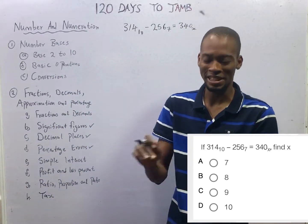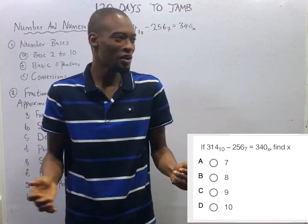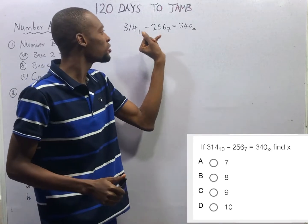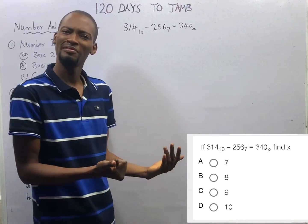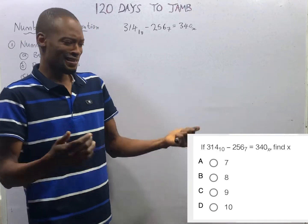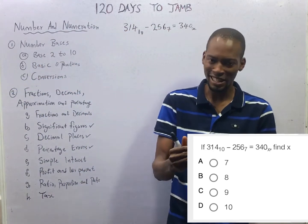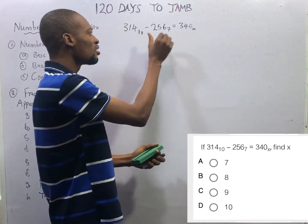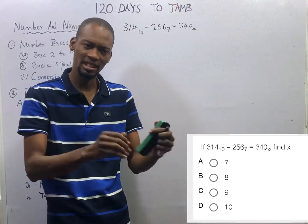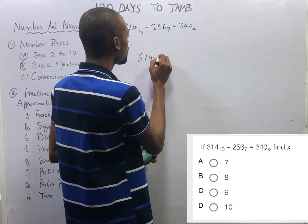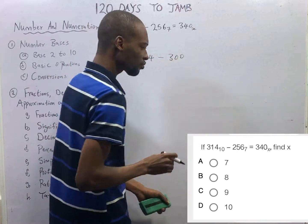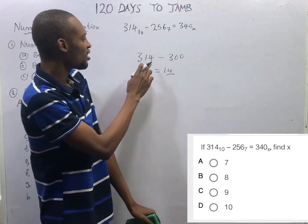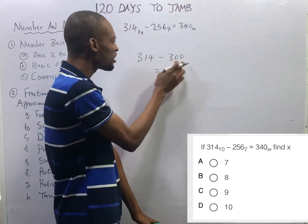When you see questions like this, what comes to your mind? Or what do you think you should do? I don't know what might be running through your mind right now. But when you come across questions like this, in different bases, don't solve or do anything directly. If I say 314 minus 300, you are only allowed to say that this is equal to 14, because they are both in the same base or because no different base is specified.